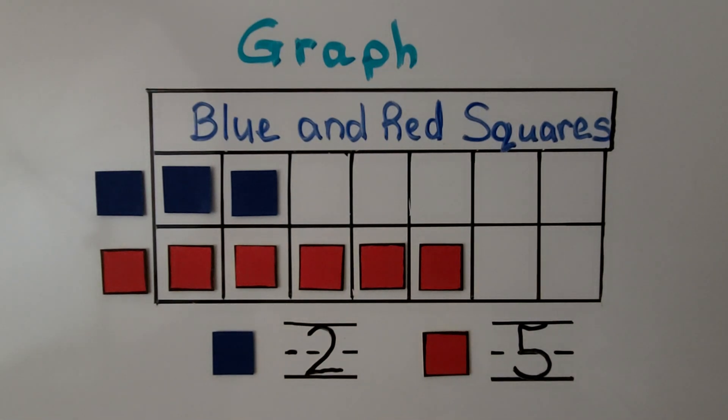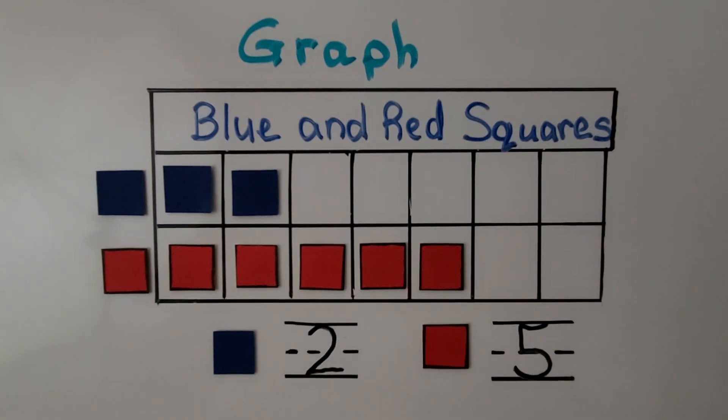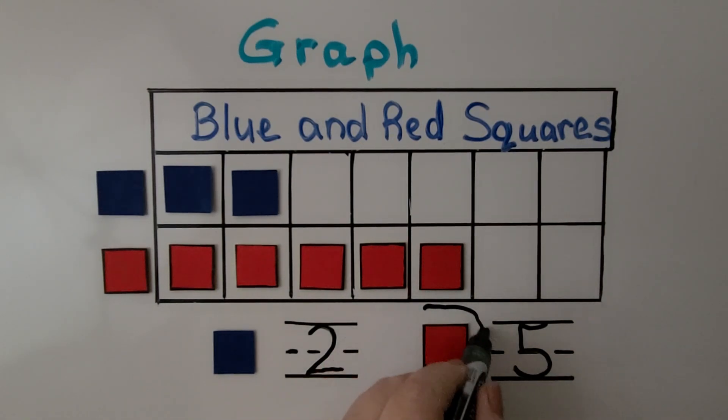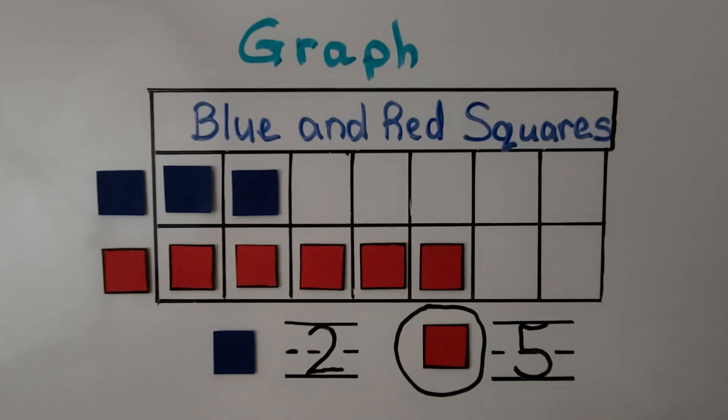We need to circle the category that has more counters on the graph. Which one do you think we should circle? Should we circle the blue one or the red one? If you said the red one, you're right. The row of red sticks out farther than the blue. There are fewer blue squares. We need to circle the red one because there are more red. Five is more than two.